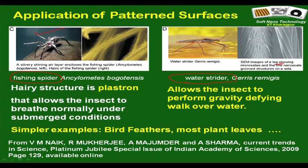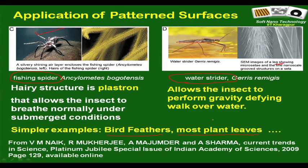In the spider's case, the hairs entrap oxygen which sustains breathing for about half an hour. In the water strider's case, the legs are extraordinarily hydrophobic, creating air pockets that lead to an artificial buoyancy effect. Similar examples include bird feathers — birds get wet but dry up very quickly without a hair dryer. Most plant leaves, like the lotus leaf, are hydrophobic for survival: growing on a pond surface, if water clogs on the leaf and does not drain off, the weight would submerge and kill the plant.